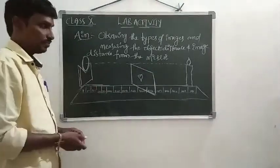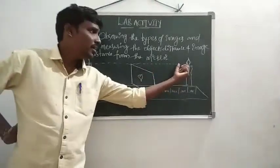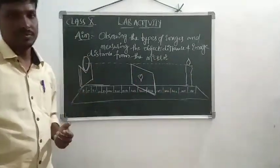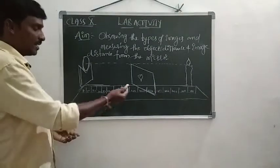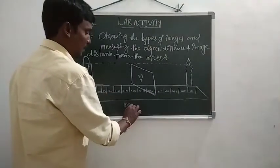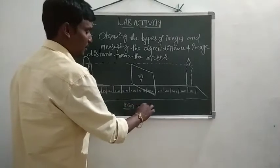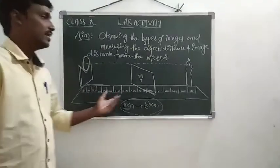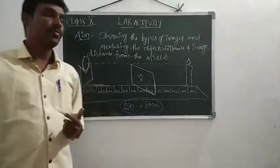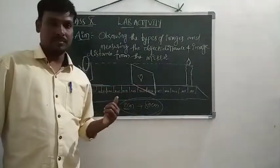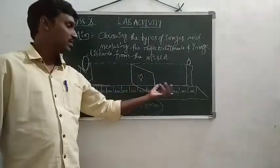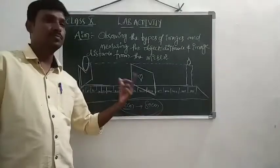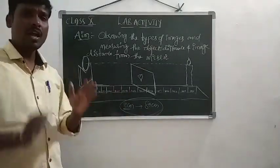Keep the candle at different places on the meter scale, from 10 centimeters to 80 centimeters. Select different distances in that range and place the candle at different distances from the mirror.